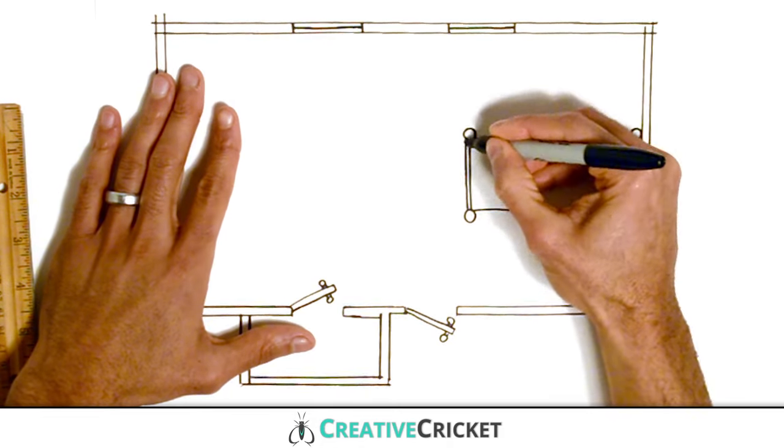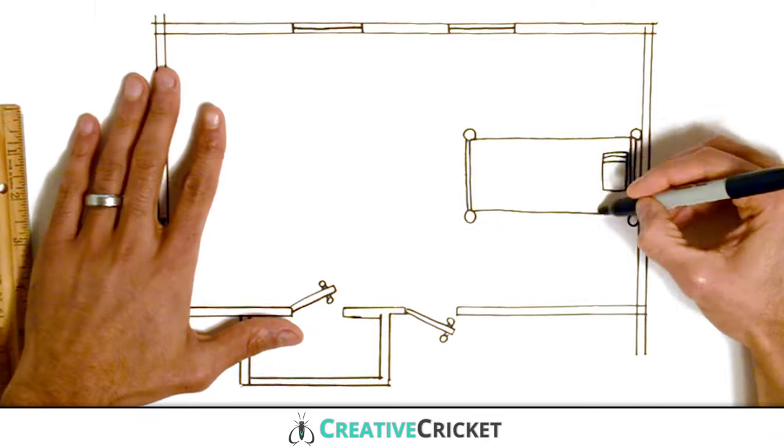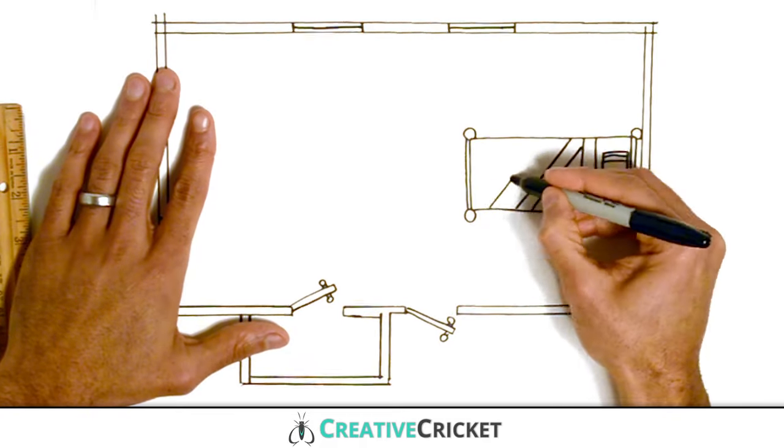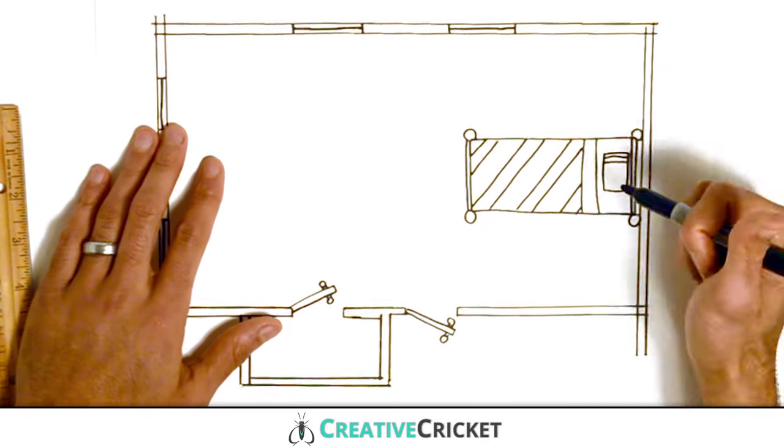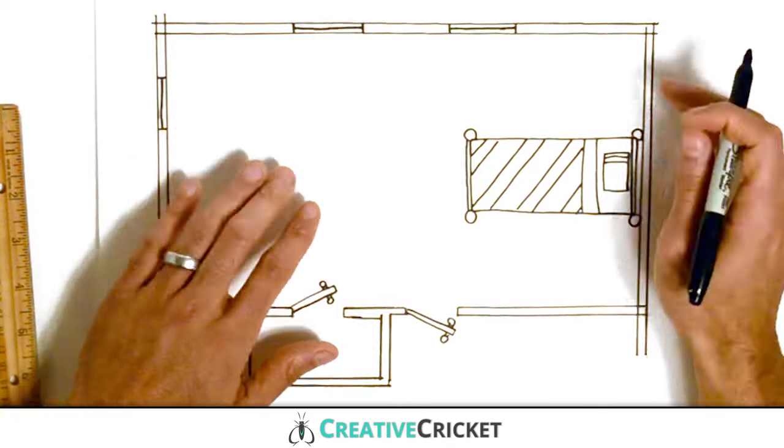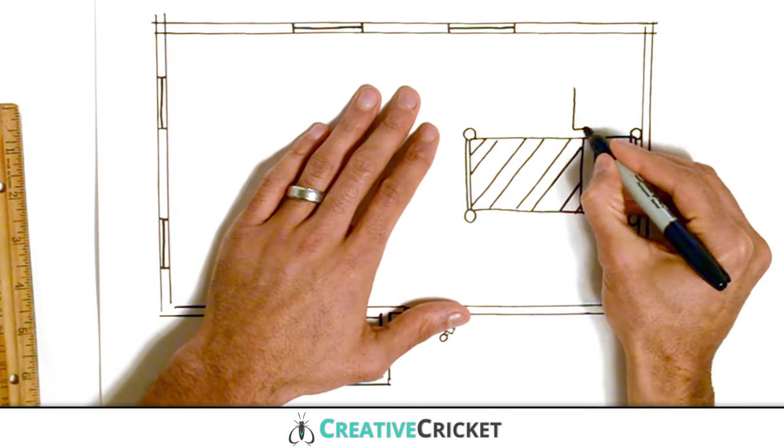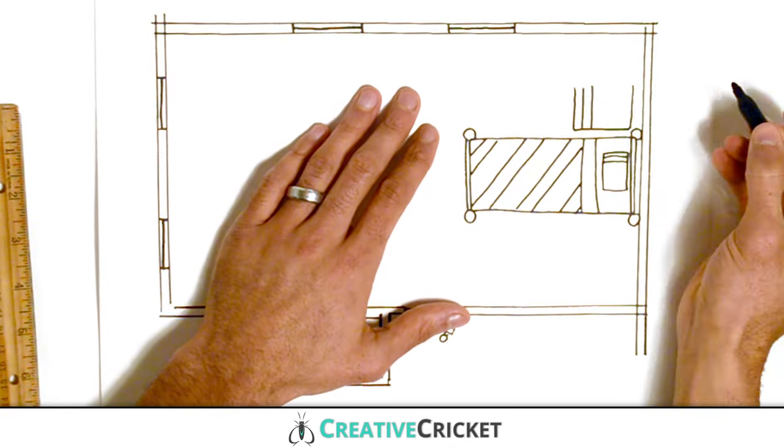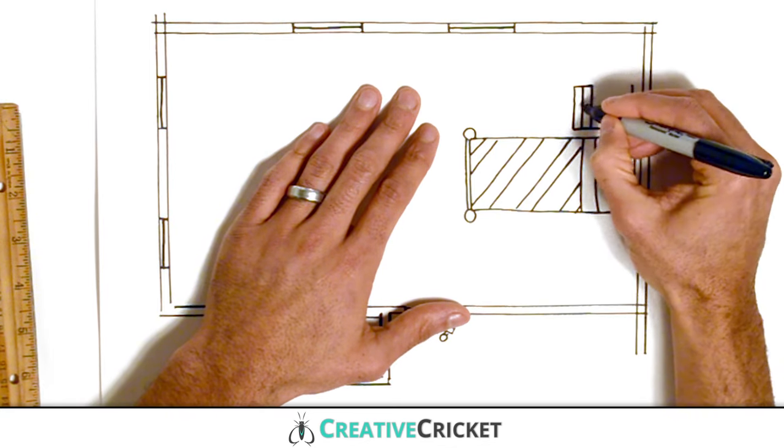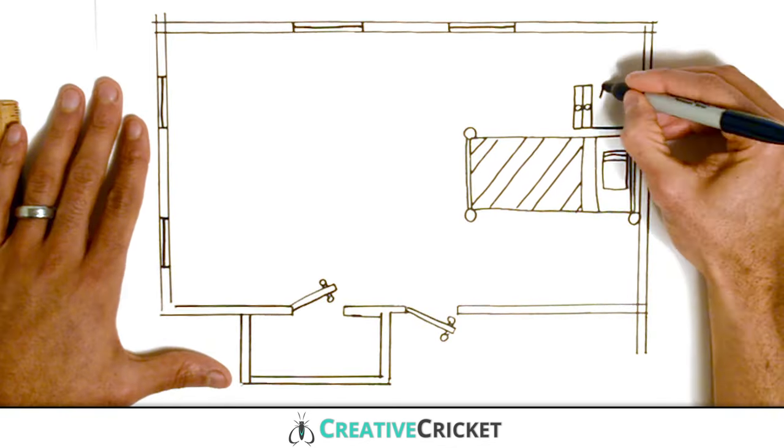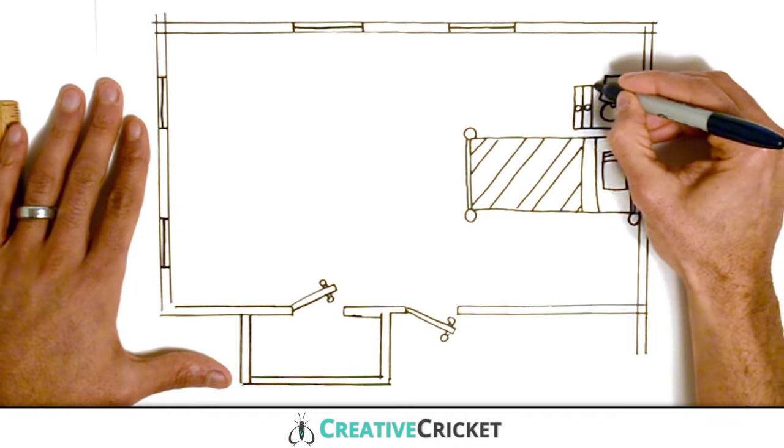Cool. Now I'll draw a nightstand next to the bed. Of course when viewing the room from above we won't be able to see these drawers, but I'll still draw them in just for fun. I'll even draw a little lamp here on top and that'll give me a little light source.